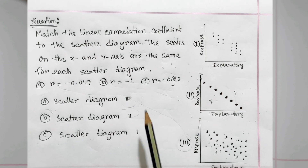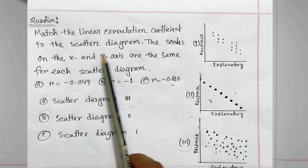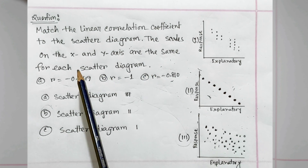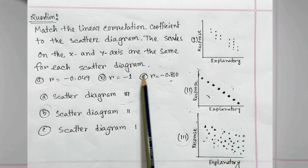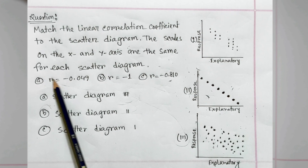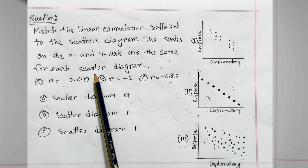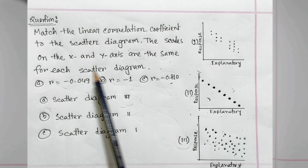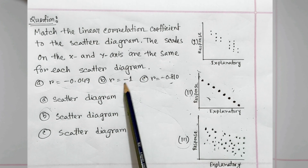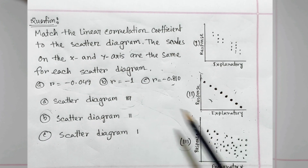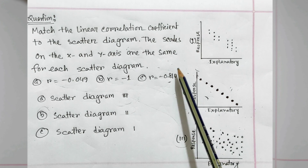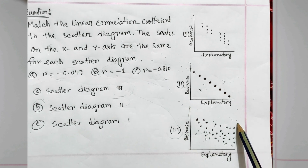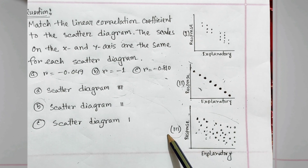Match the linear correlation coefficient to the scatter diagram. The scales of the x and y axes are the same. We have to determine which graph has which correlation coefficient — which graph has r equal to minus one, and which ones have other values.